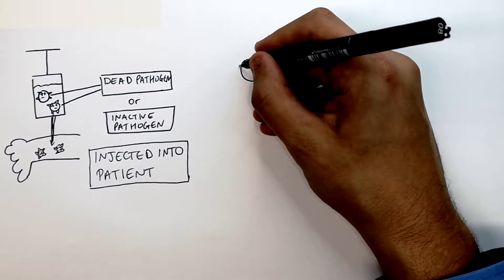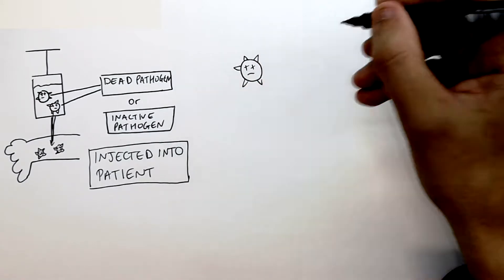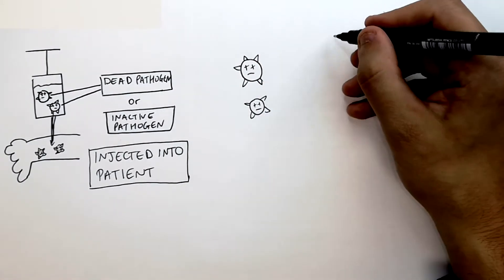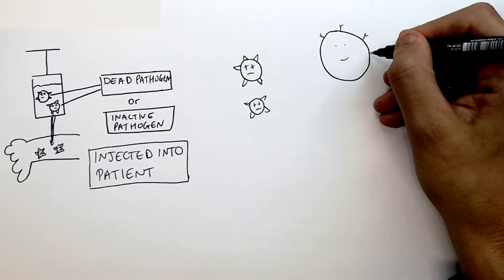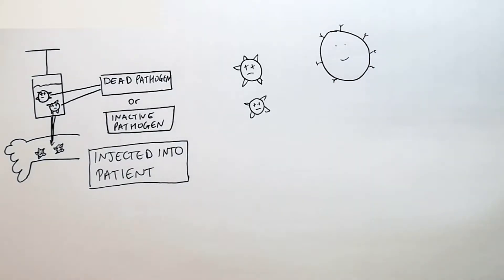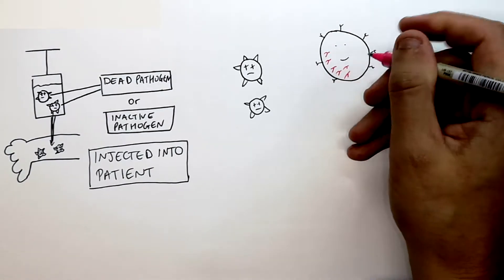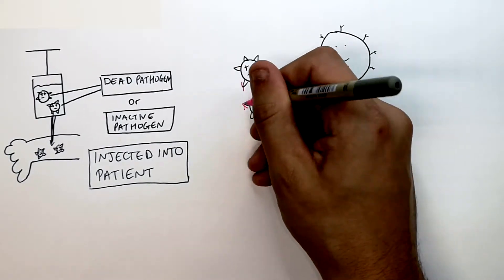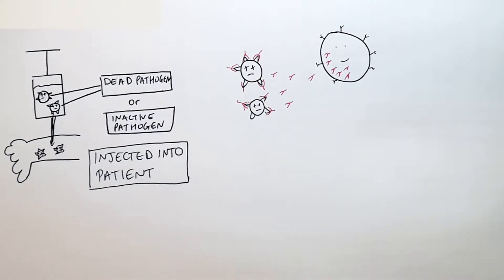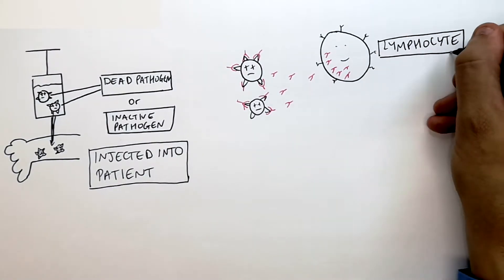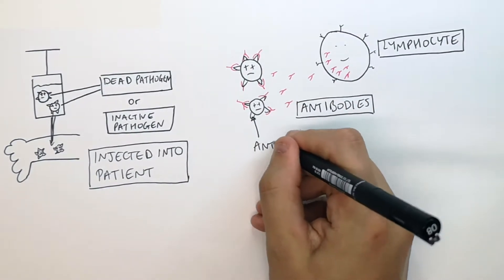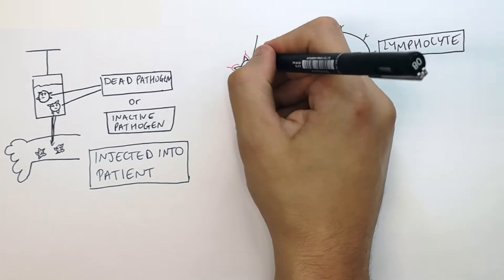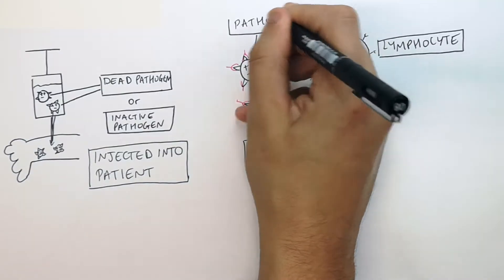This will then stimulate an immune response. The dead or inactive pathogen, with the antigens on them that you want to immunise against, causes your lymphocytes to come along and produce antibodies. The lymphocytes produce antibodies that will then bind the antigens. These are going to be specific antibodies for that pathogen, and they are going to bind the antigen on the pathogen.